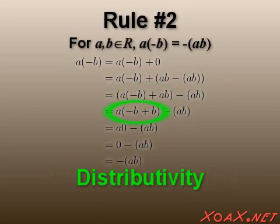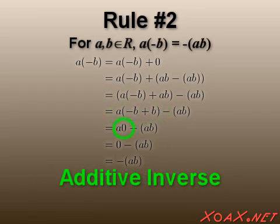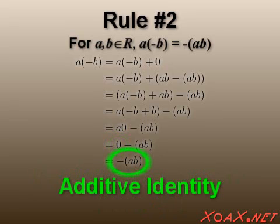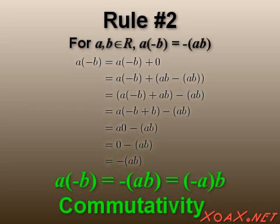After that, we apply the distributive property. Then we apply the property of additive inverses. For this next step, we use the rule that we just derived about multiplication by zero. Finally, we apply the additive identity property again to finish the proof. Note that this works the other way around by commutativity.